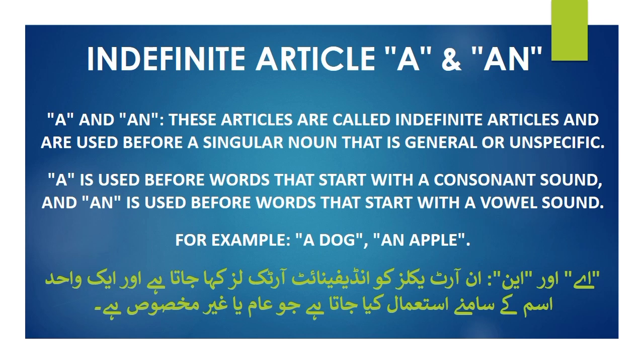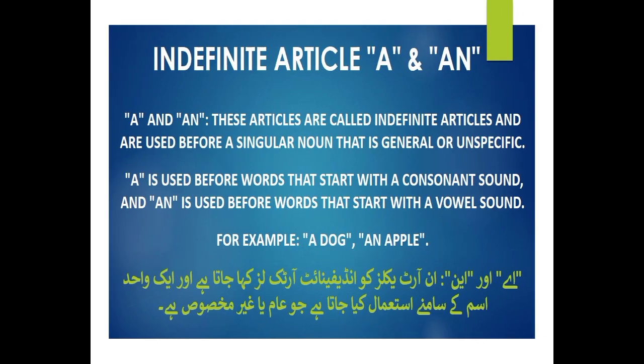For example, a dog and an apple. A اور AN کو indefinite article کہا جاتا ہے اور یہ واحد اسم کے ساتھ استعمال کیے جاتے ہیں جو کہ عام اور غیر مخصوص ہے۔